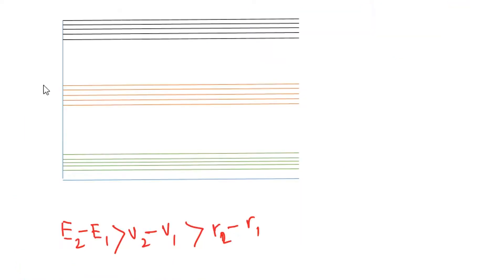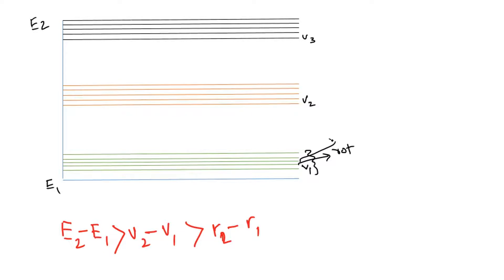We have discussed different types of vibrational and rotational motion. Consider electronic transitions E1 and E2 — every electronic transition has associated vibrational levels (V1, V2, V3), and every vibrational level in turn has associated rotational levels (R1, R2). After observing IR radiation absorption, the resulting spectrum is a vibrational-rotational spectrum.